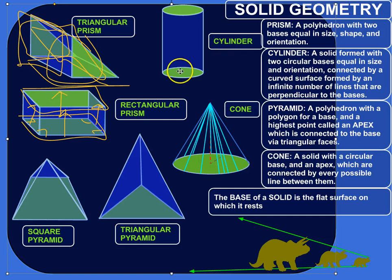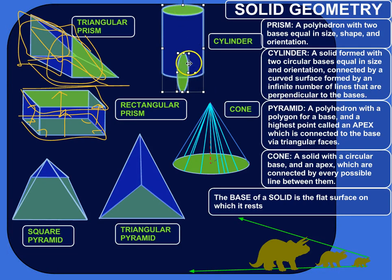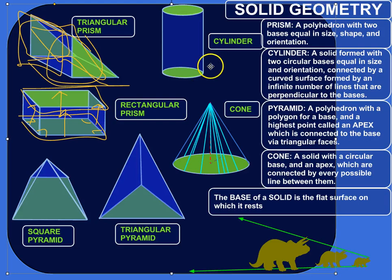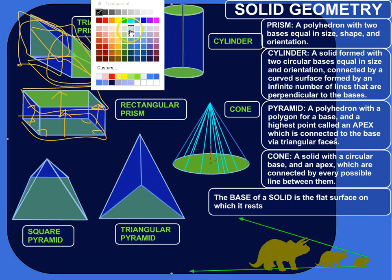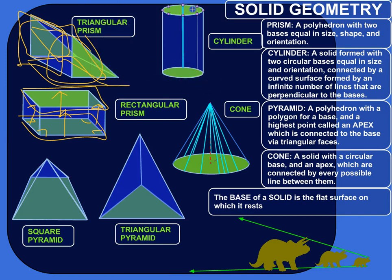A cylinder is made up of two circular bases that are equal in size and facing the same way — not one base doing this and another doing that. They're connected by a curved surface. You can think of it like connecting lines along the circumference of the bases, and if you make enough lines you'll get that curved surface all the way around. Just think of it as a can of beans: you've got the top and bottom of the can, and then the curved surface where the label is.